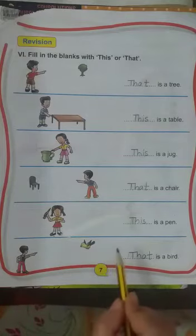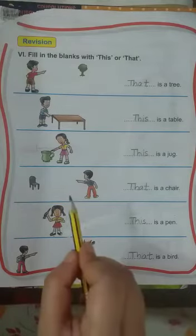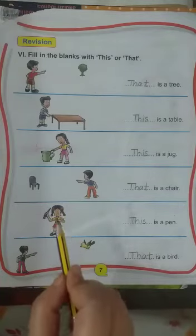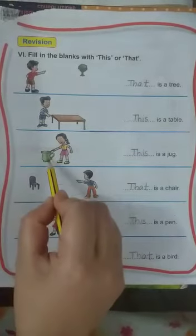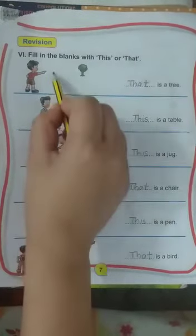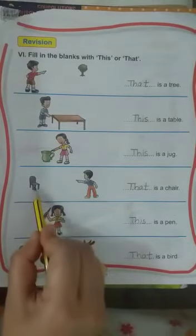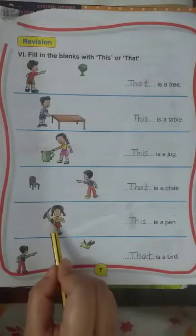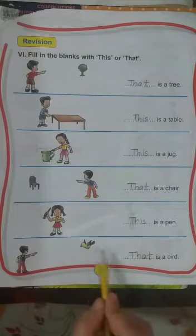Things which are far from us, we denote with 'that'. Things which are very near to us, we denote with 'this'. So: the tree is far from the boy — we use 'that'. The pen is in her hand — we use 'this'. The bird is far — we use 'that'.